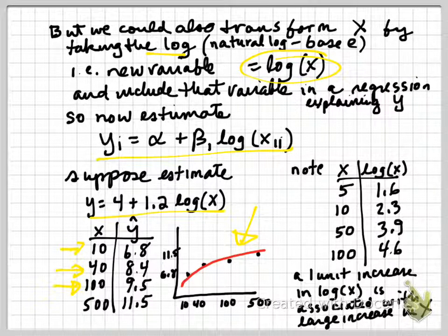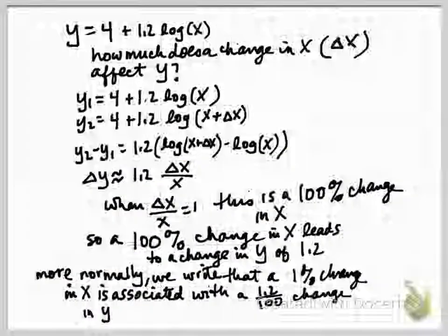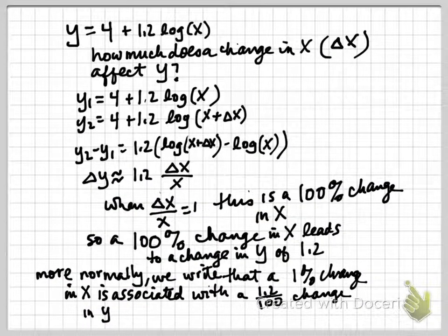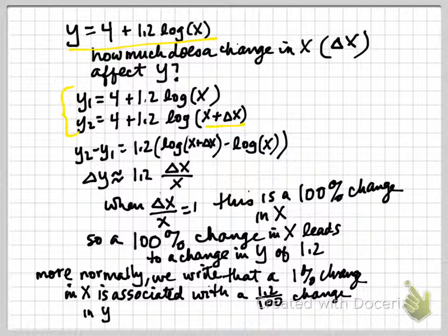Now we can think about how we interpret that regression. So we have y equals 4 plus 1.2 log of x. So we're asking the question, how much does a change in x, a delta x, affect y? So to answer that question, we construct two predicted outcomes for y: y when the x variable just takes on x, and then y when the x variable takes on a value x plus delta x. And then we take the difference of those two, y2 minus y1.